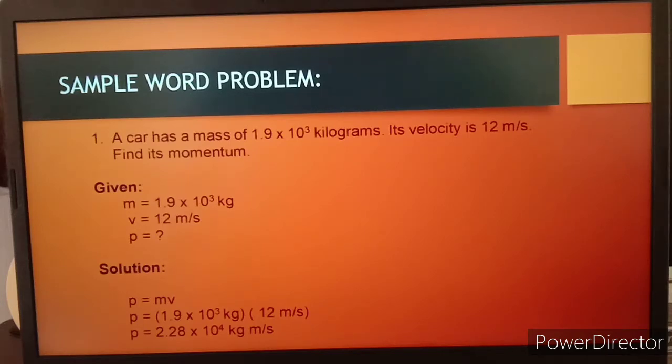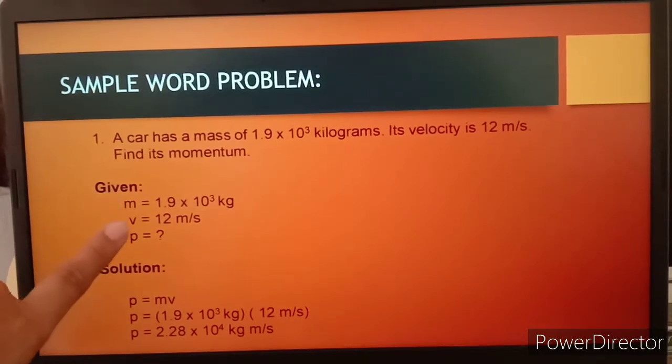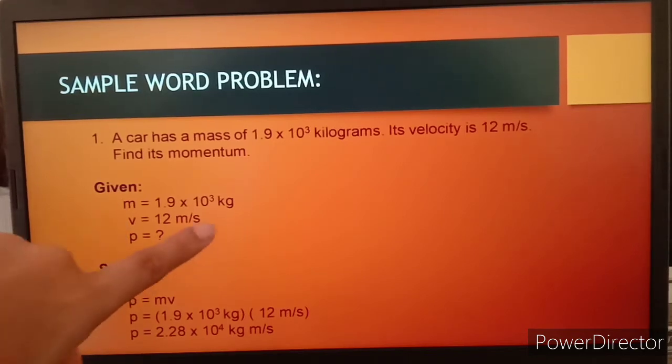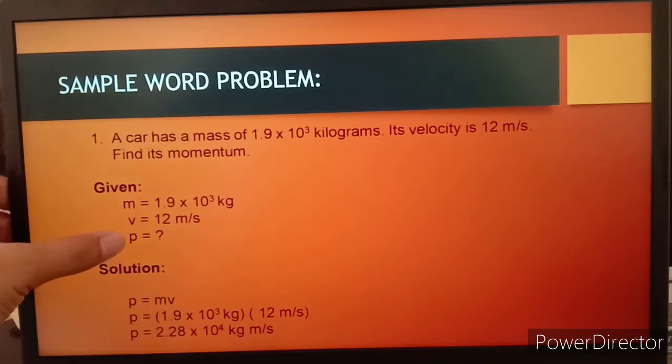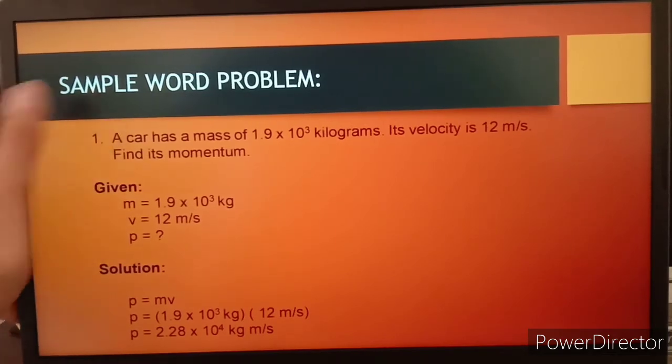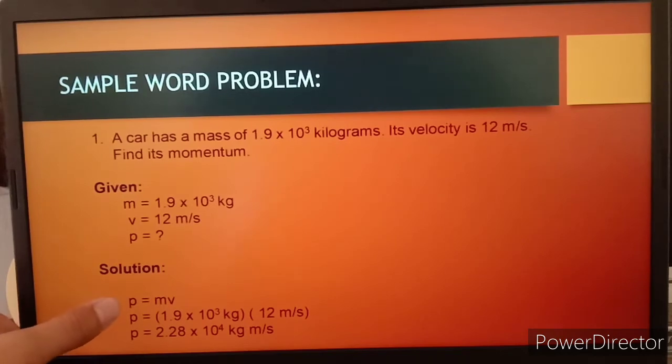In the given, we have the mass and the velocity. It is a vector quantity which follows a direction. That's why the unit here is in meters per second. What we're looking for in the word problem is the momentum of the car. We're going to use this formula: p = mv.